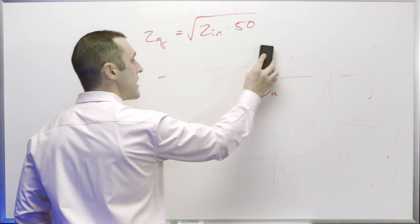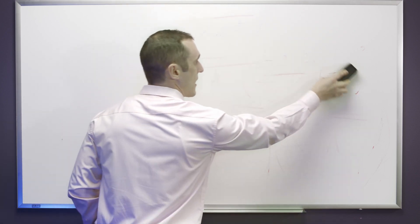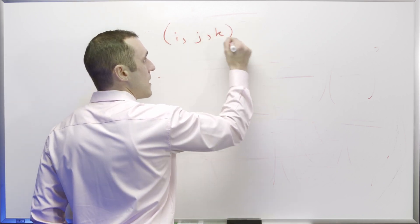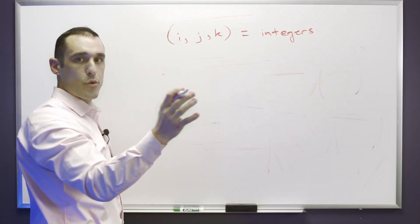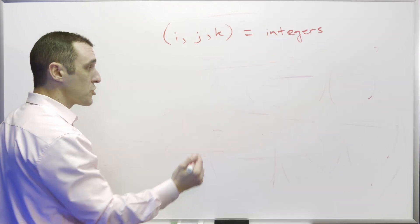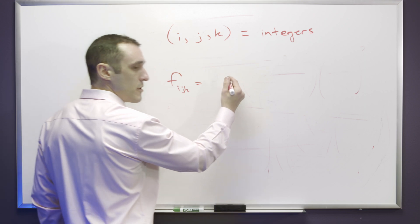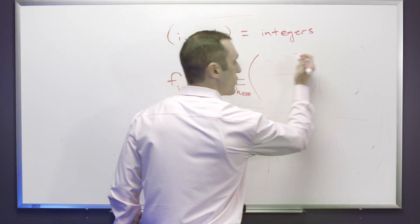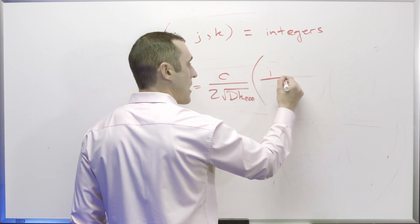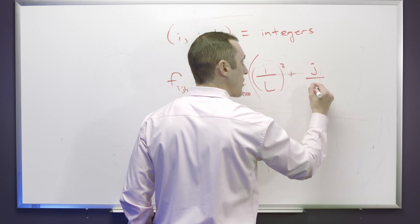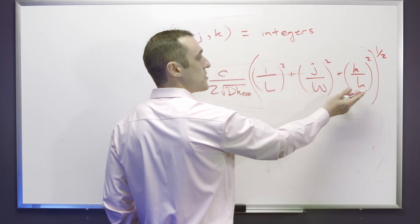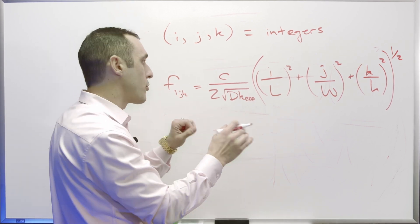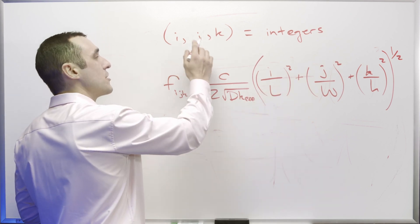Higher-order frequencies are indexed by three integers i, j, and k associated with the length, width, and height of the patch antenna respectively. Each frequency f_ijk equals c divided by (2 times the square root of DK effective), multiplied by the square root of (i/L)² plus (j/W)² plus (k/H)². This allows you to calculate any frequency at which the patch antenna can operate, as long as i, j, and k are integers.